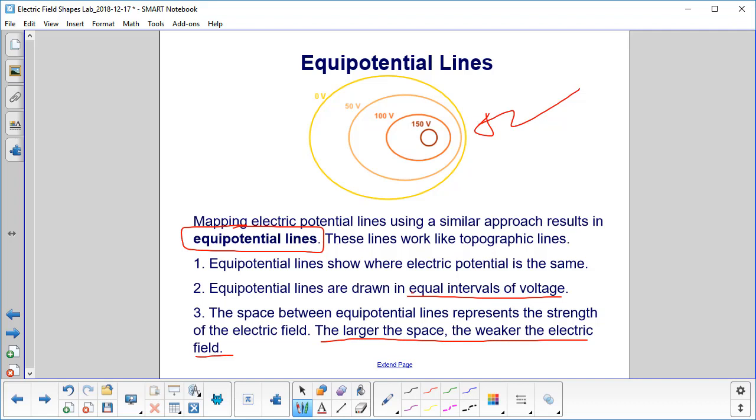With the topographic lines, the larger the space, the less of an incline you had, the easier it was to walk up or down.